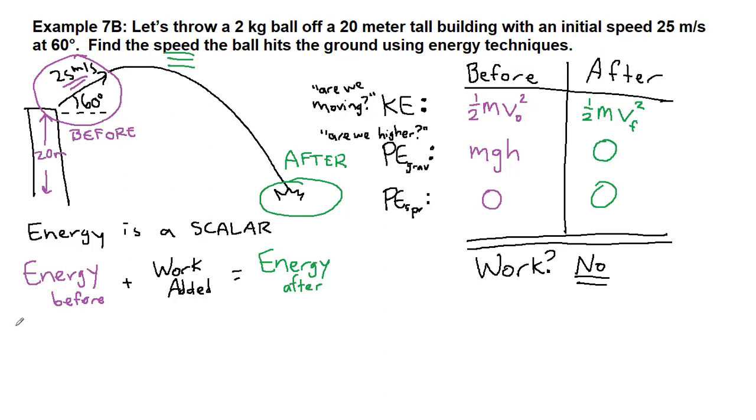So for energy before, we're adding up all the terms in the before column: one-half mv initial squared plus mgh plus zero. With the work term, we're seeing whether we said yes or no. Because we said no, we'll put a zero there. And then the energy after column, we have one-half mv final squared plus zero plus zero.